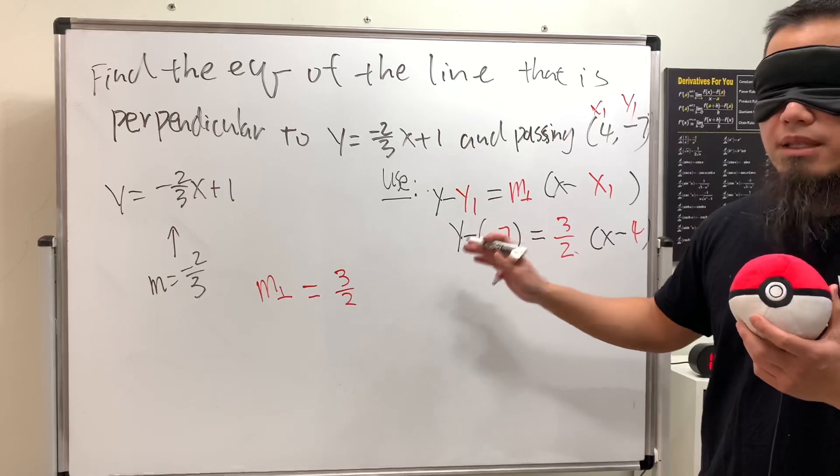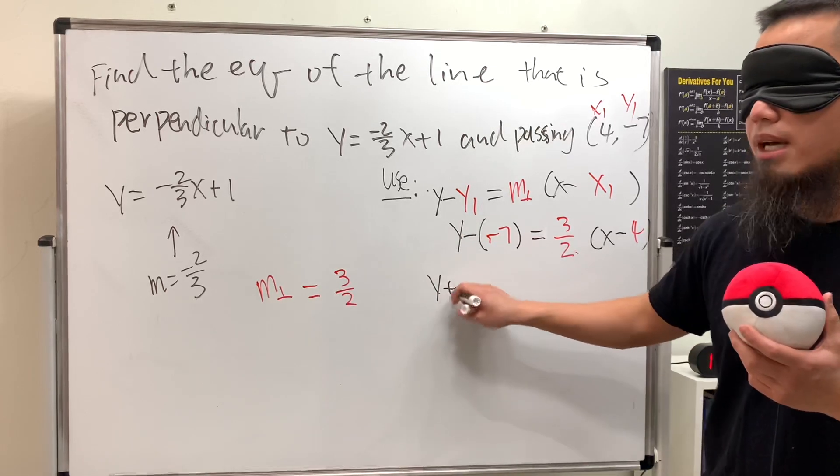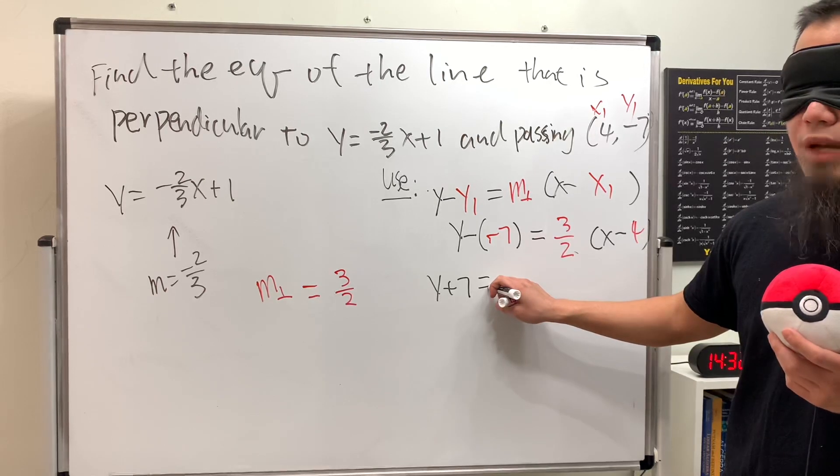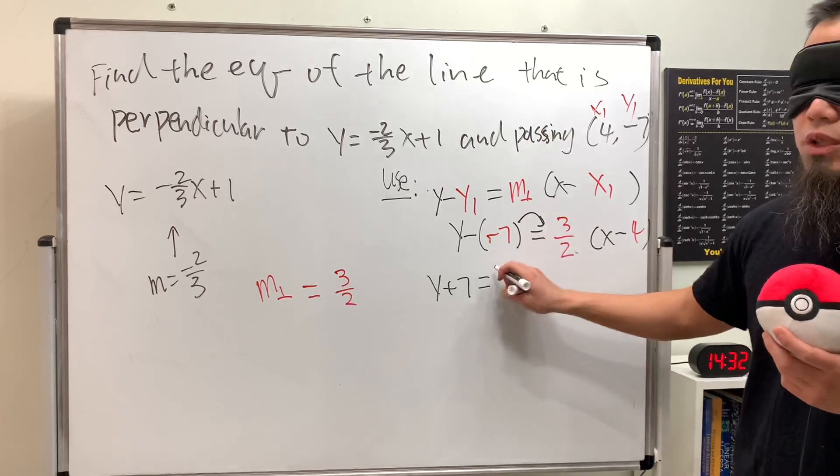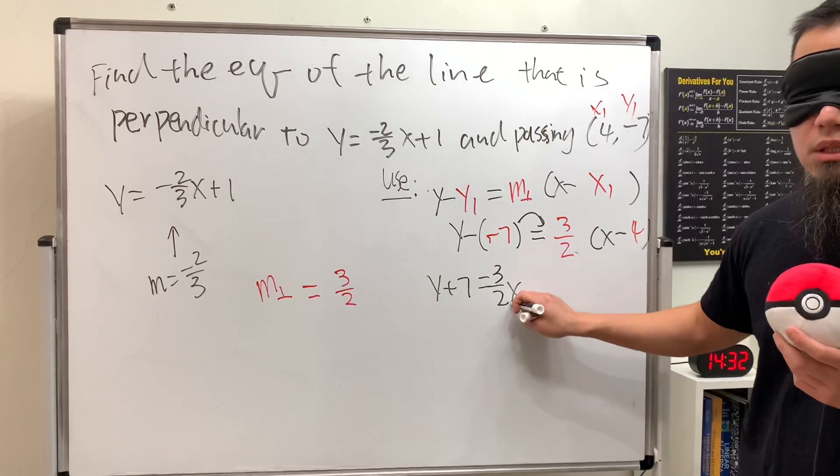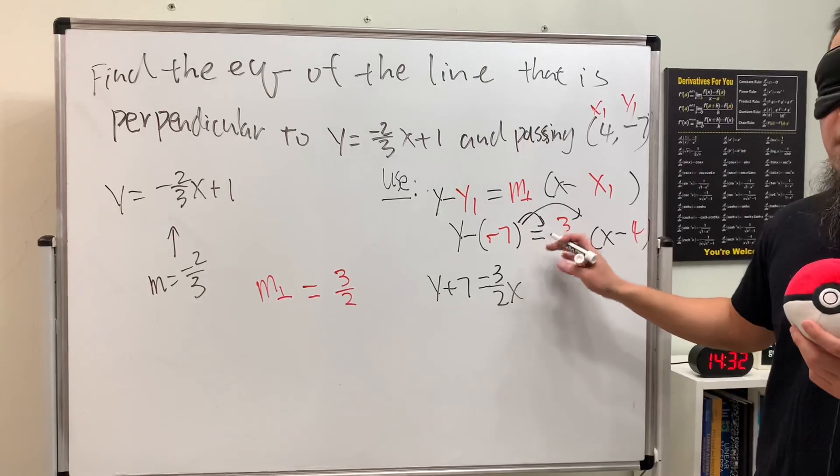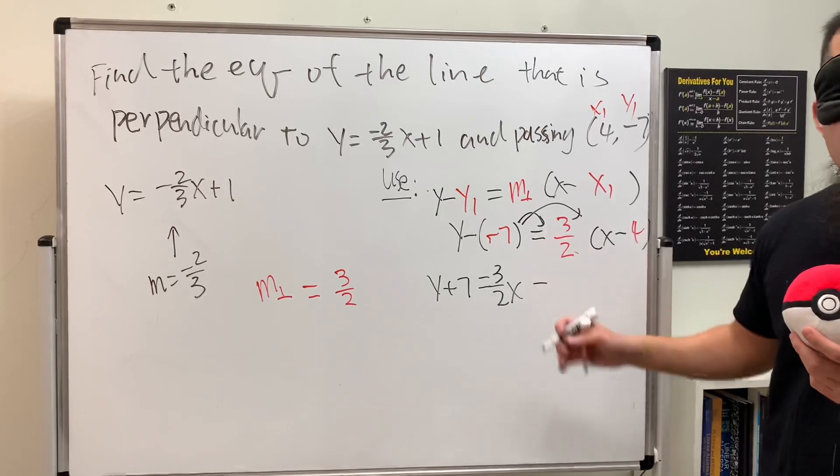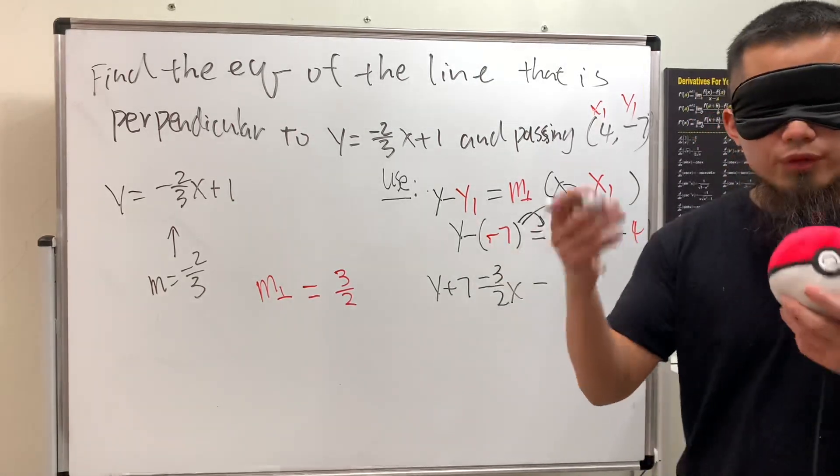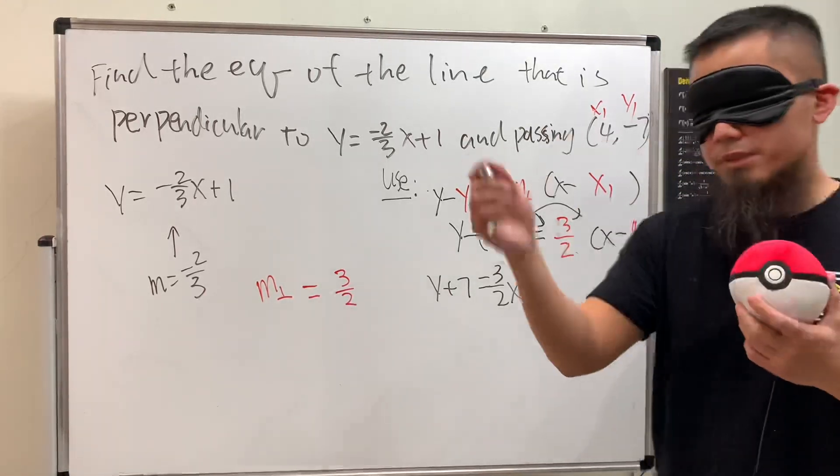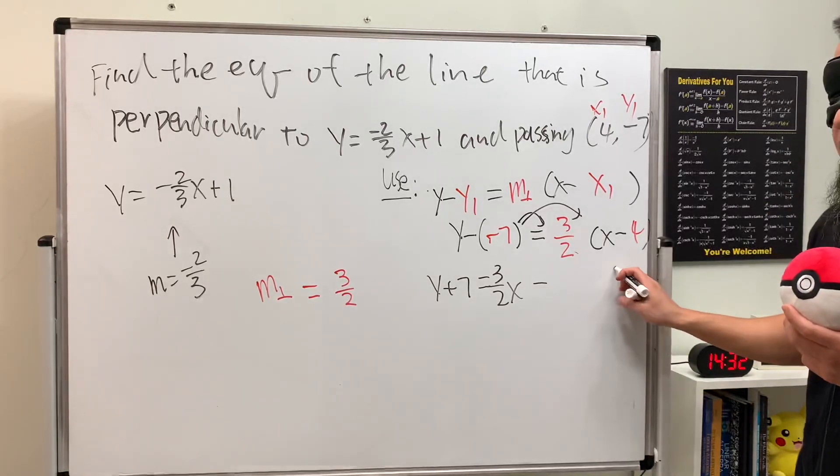Now we distribute. Three over two times x gives us three over two x, and three over two times negative four: two cancels into four twice, and two times three is six, so we get three over two x minus six.